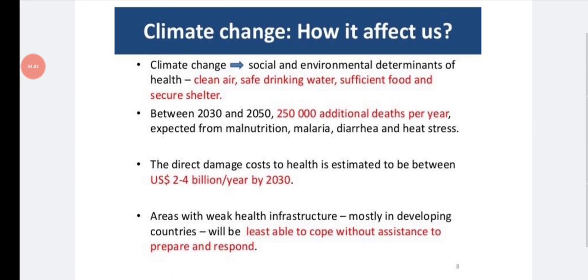Climate change will affect us in social and environmental determinants of health - those are clean air, safe drinking water, sufficient food and secure shelter. So if there is change in the climate, there will be changes in the air, water, food and shelter also. Between 2030 and 2050, 250,000 additional deaths per year expected from malnutrition, malaria, diarrhea and heat stress. So between the year 2030 and 2050, we can expect additional 250,000 deaths just because of malnutrition, malaria, diarrhea and heat stress. That's because of climate change.